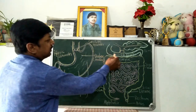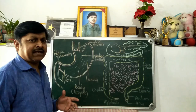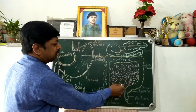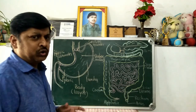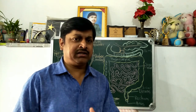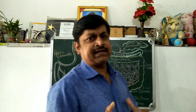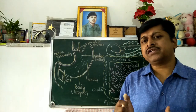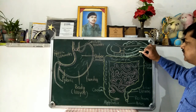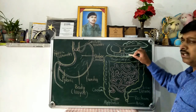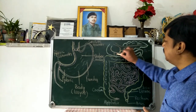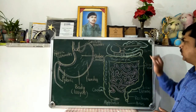The small intestine includes the duodenum, jejunum, and ileum. The total length of the small intestine is 6 to 6.5 meters. The first part is the duodenum, which is 12 inches in length. The duodenum opens into the jejunum — a highly coiled structure — and the jejunum opens into the ileum.